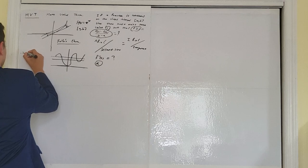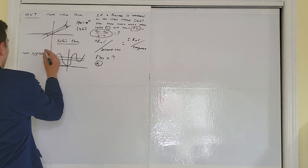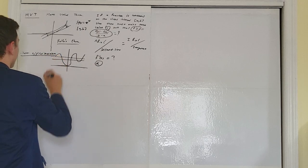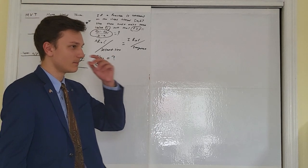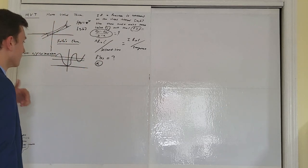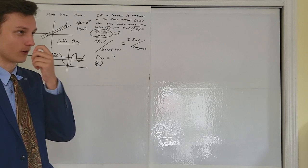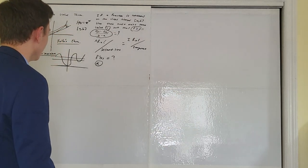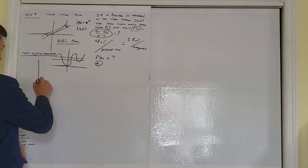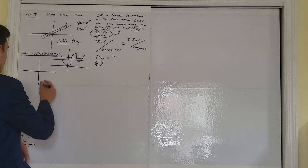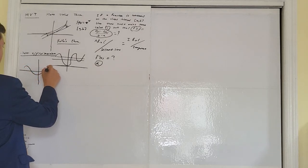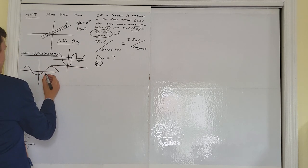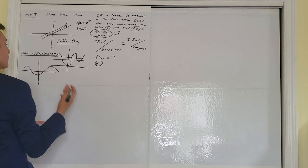Next we have local linear approximation, or just linear approximation. You're going to see linear approximation pop up again much later in Calc BC, where it evolves into something much more complex known as the Taylor series — but that's the last unit. Linear approximation is basically this: if I have a function and I don't know what it is, but I know a point on it, and I know f prime of 4 — the slope of the tangent line at that point.